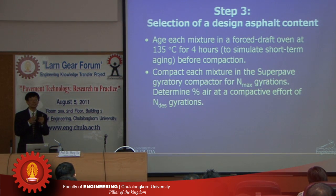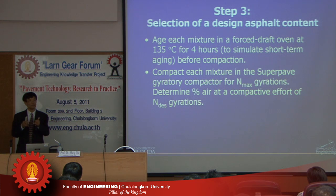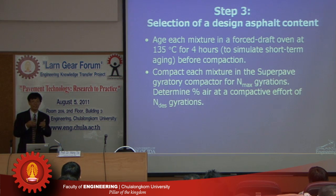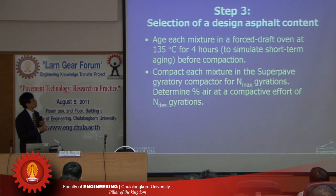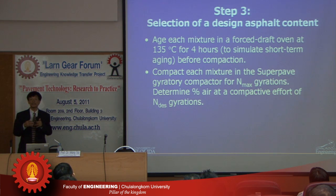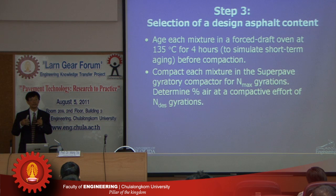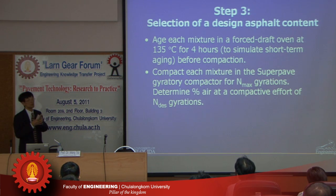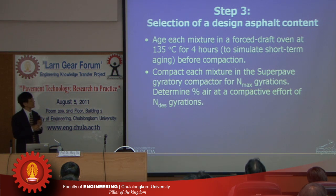After selecting the right asphalt and aggregate with proper gradation, mixtures are made at different asphalt contents to determine the optimum. After mixing, the mixture is placed in a forced-draft oven at 135°C for four hours. This simulates the field condition, where in plant production the mixture stays hot in the truck for some time. During this process, the asphalt age-hardens, so this method simulates that short-term aging process. After the aging process, the mixture is then compacted.